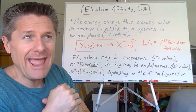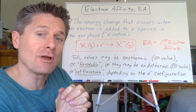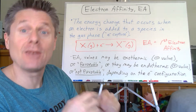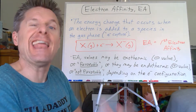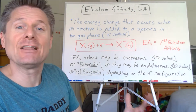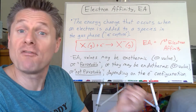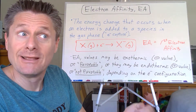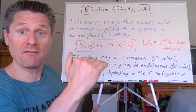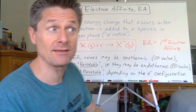Electron affinity, though, has more to do about what its starting electron configuration is, and after you add the electron, what's its ending electron configuration? Does adding that electron create a more favorable electron configuration that's lower energy? Remember, we want filled subshells, half-filled subshells, those kinds of things. It wants to become like the noble gas.